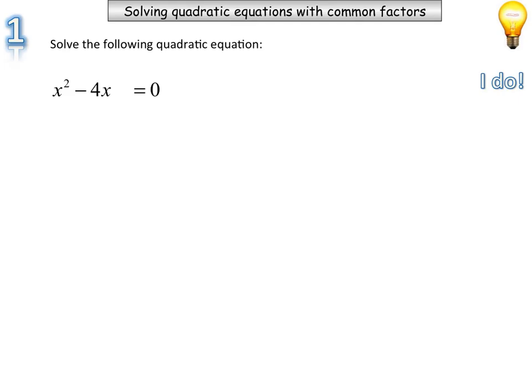Now, noticing that these two expressions, or this expression here, x squared and negative 4x have a common factor. What's the common factor that we can take out?